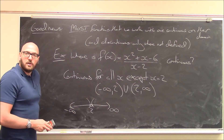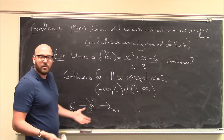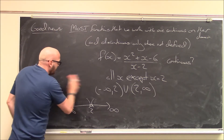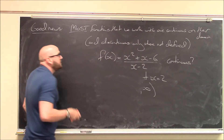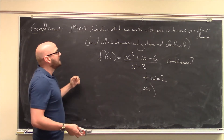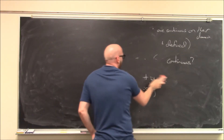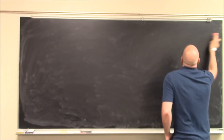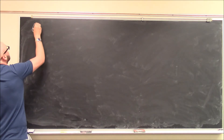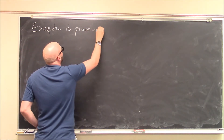So for most functions, if you want to know where it's continuous, just look for its domain — usually you're looking for things like division by zero or square roots of negative numbers. But I said most. The exception is piecewise functions. If you're given any function defined by a single expression, it's continuous on its domain. But if you're given something defined piecewise, you have to be a little bit more careful.